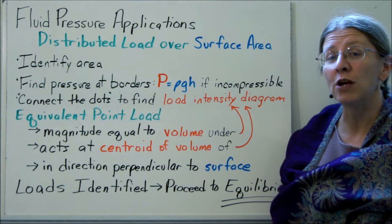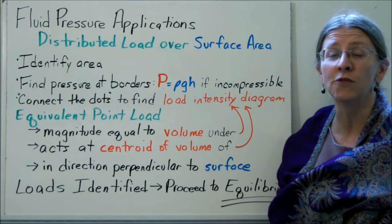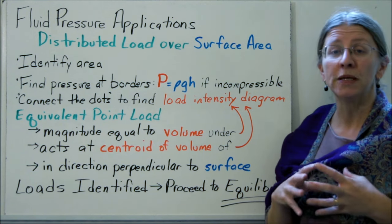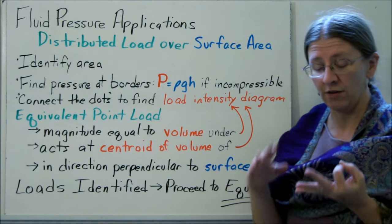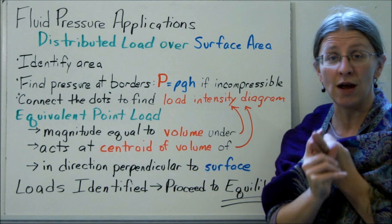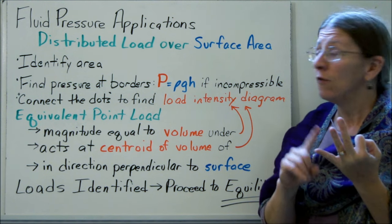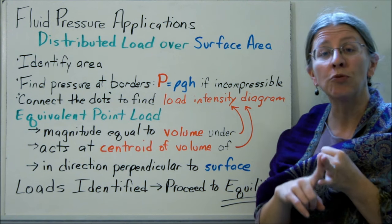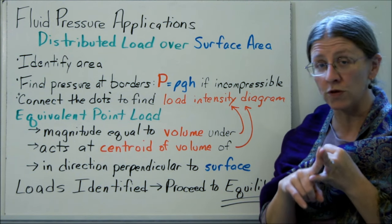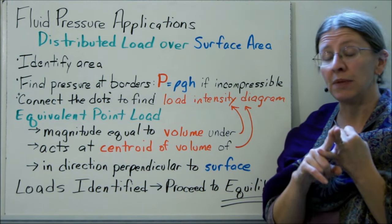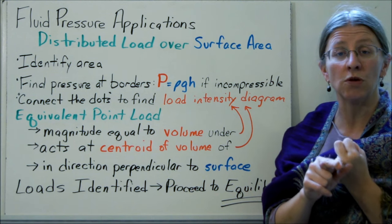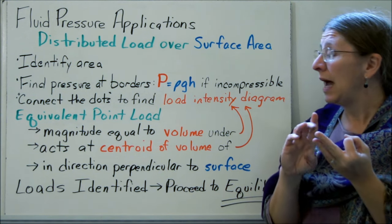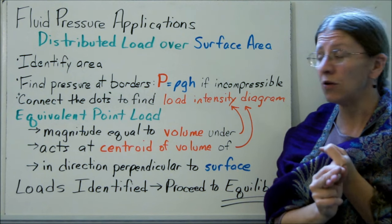I want to talk for a minute about fluid pressure applications and how we calculate fluid pressure on various surfaces. Fluid pressure is a distributed load that acts over surface area. There are three basic things you want to do: find out what area your fluid pressure acts over, find out what the pressures are at the boundaries using pressure equals ρgh, especially if you're dealing with incompressible fluids, and connect the dots to make a load intensity diagram.